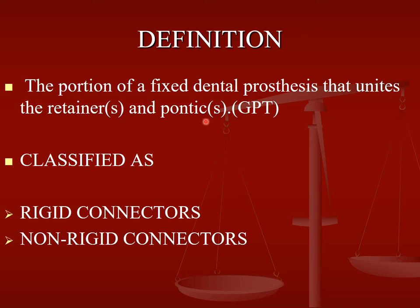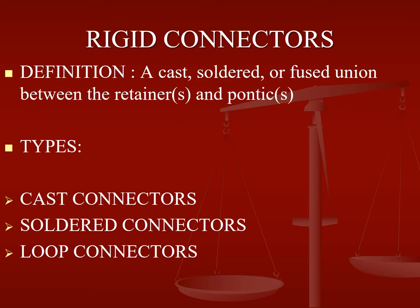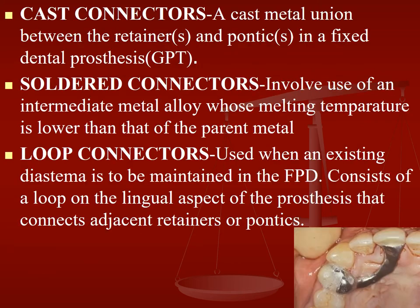Coming to connectors — according to the GPT, a connector is the portion of the fixed dental prosthesis that unites the retainers and the pontic. It basically joins the pontic and the retainers together. Connectors are classified as rigid connectors and non-rigid connectors. A rigid connector is defined as a cast, soldered, or fused union between the retainer and the pontic. The types are cast connectors, soldered connectors, and loop connectors.